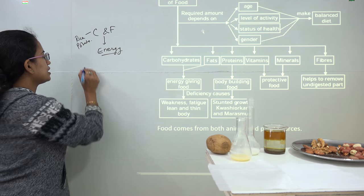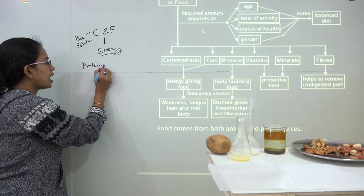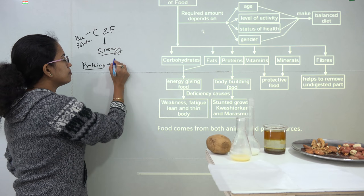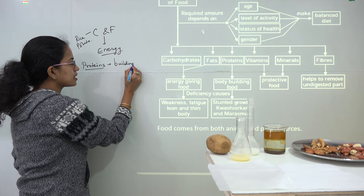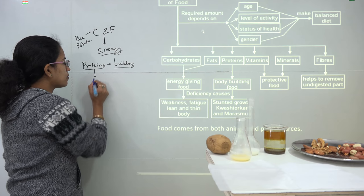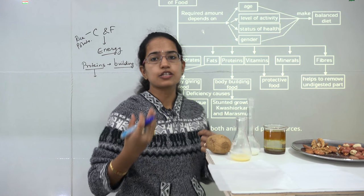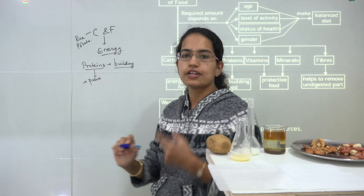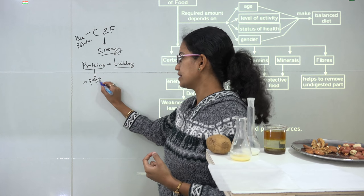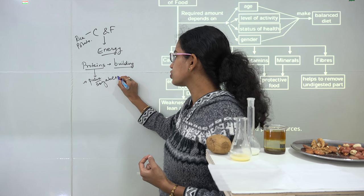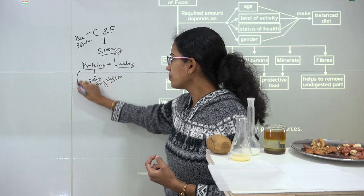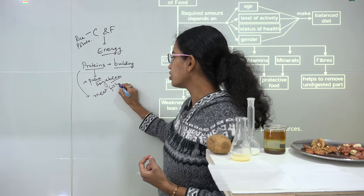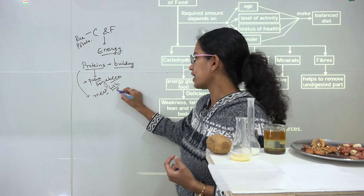Coming on to the next category, we have proteins. Proteins are considered as body-building foods — they are the building blocks of the body and help in growth. Common sources of protein include pulses from vegetarian or plant sources, and soya bean is a very rich source of protein. From animal sources you have meat, fish, and egg.